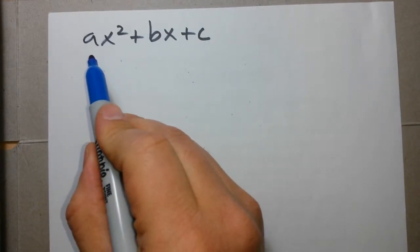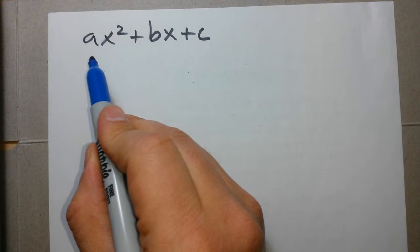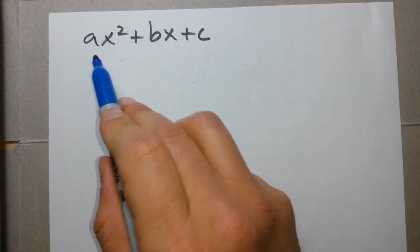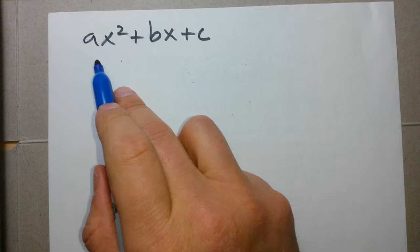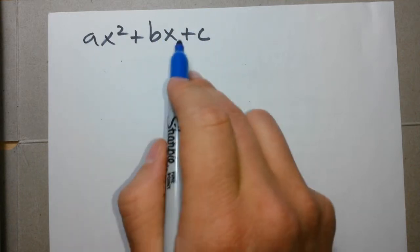So we have a quadratic equation that is in standard form. We know that a, b, and c are constants. So just like before, let's complete the square of this equation.